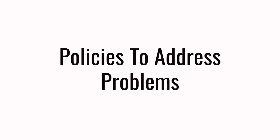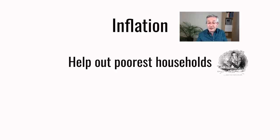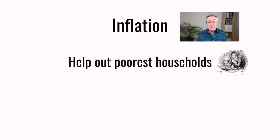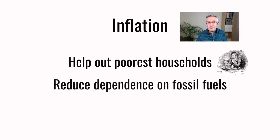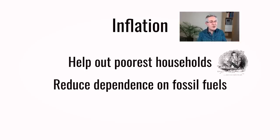What other policies could address our long-term and short-term problems? Whoever wins the job of prime minister will have to deal with the poorest households in the UK — we can't return to a Dickensian situation in which people are warming themselves by candlelight. Over the longer term, we have to avoid these problems in future, which means reducing our dependence on fossil fuels, particularly gas, by shifting to renewable energy that is domestically generated. That also means we wouldn't have to funnel money to regimes around the world which we don't really like.